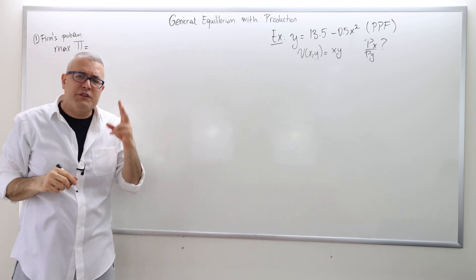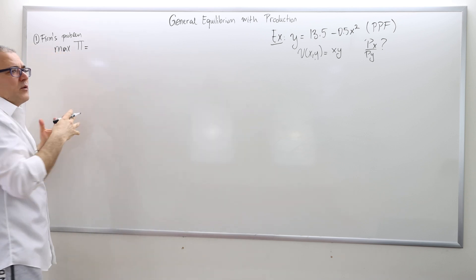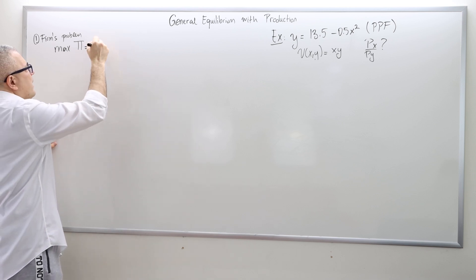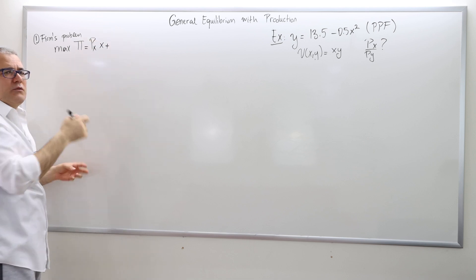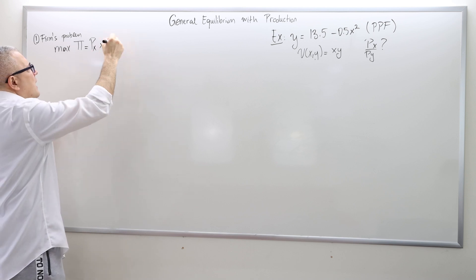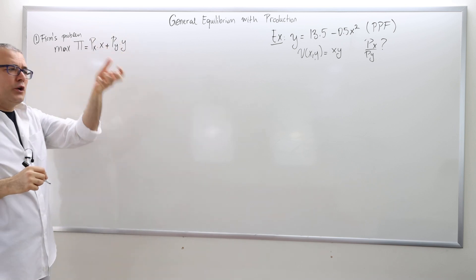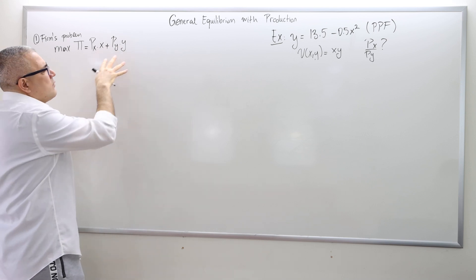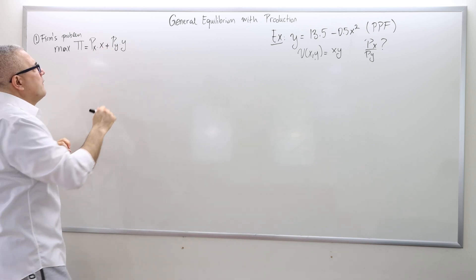The firm produces two consumption goods and sells them in the market. The good X will be sold at price PX, so PX times X is how much revenue you get from selling X amount of good X. And PY times Y is how much money you earn from selling Y amount of good Y. This is your revenue — minus no cost, so this is your profit.